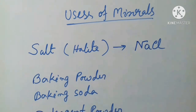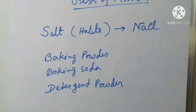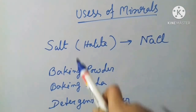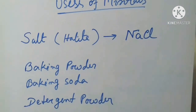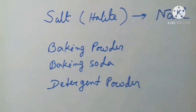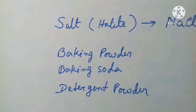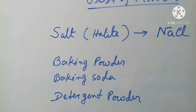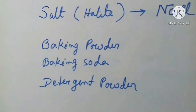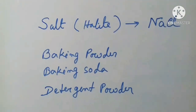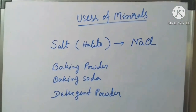Different kinds of minerals are present in different forms in our surroundings. The most popular form of mineral in daily life is salt, also called halide, which is basically sodium chloride. In baking powder, baking soda, and detergent powder — products we use daily — minerals are present. In baking powder, minerals are in the form of sodium bicarbonate and calcium acid phosphate; in baking soda as sodium bicarbonate; and in detergent powder as sodium silicate mixed with other minerals.